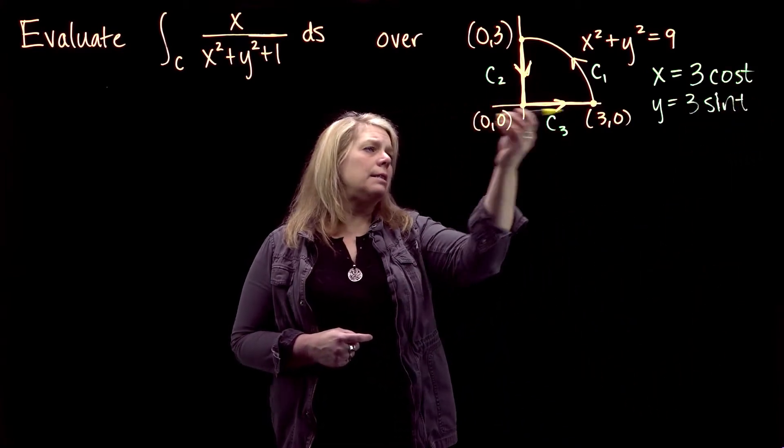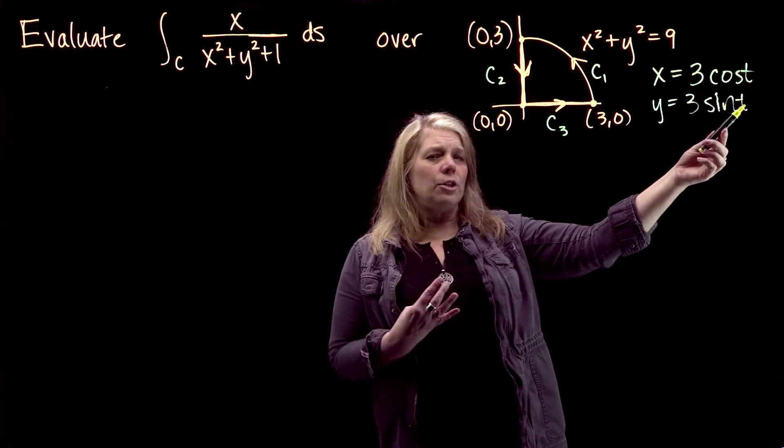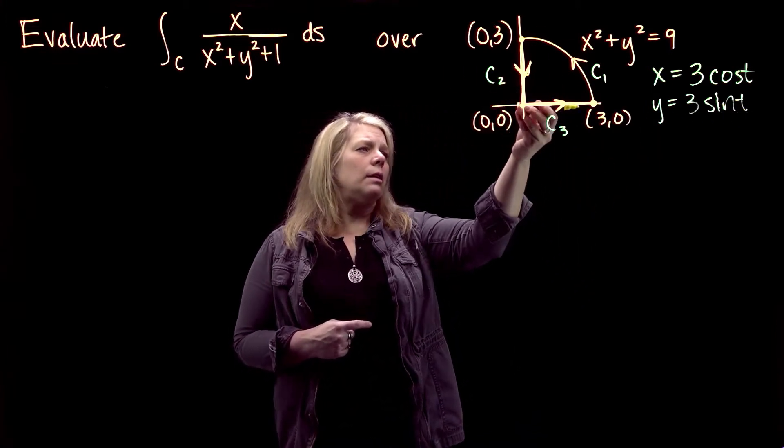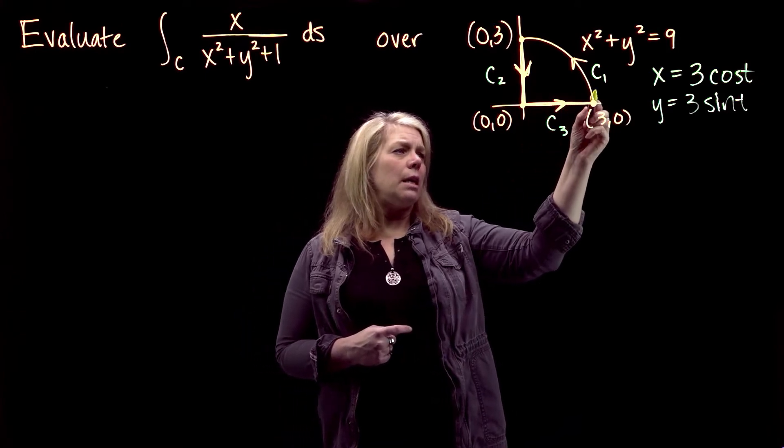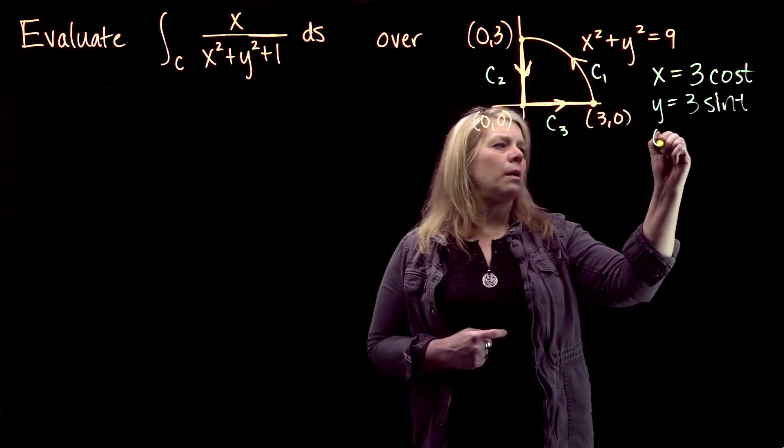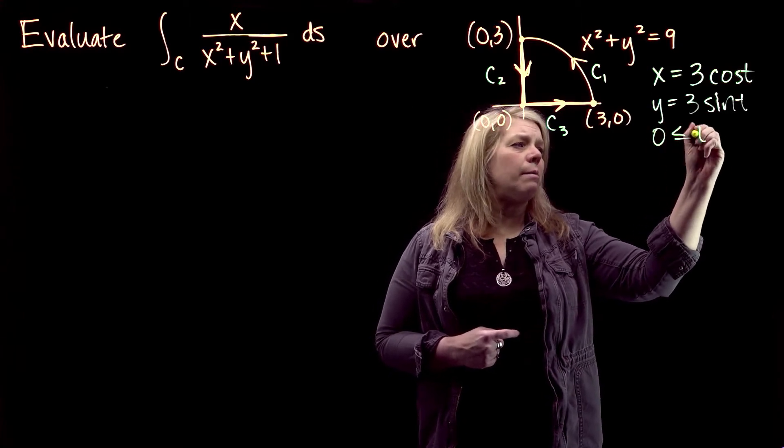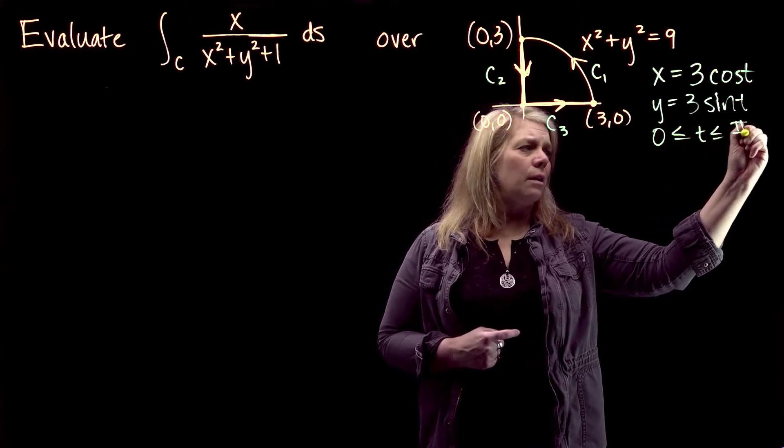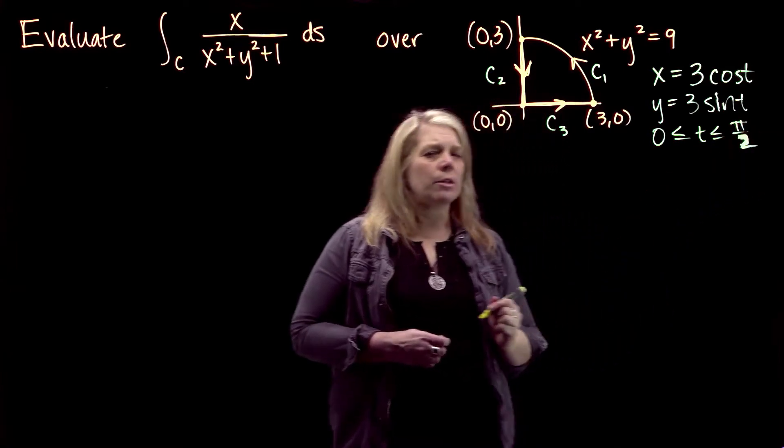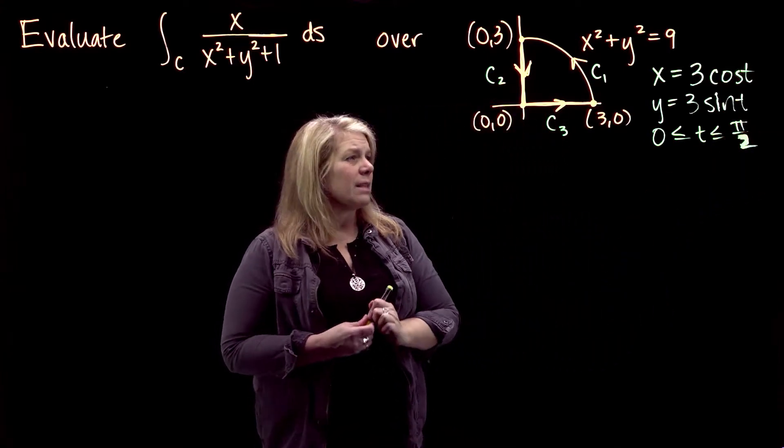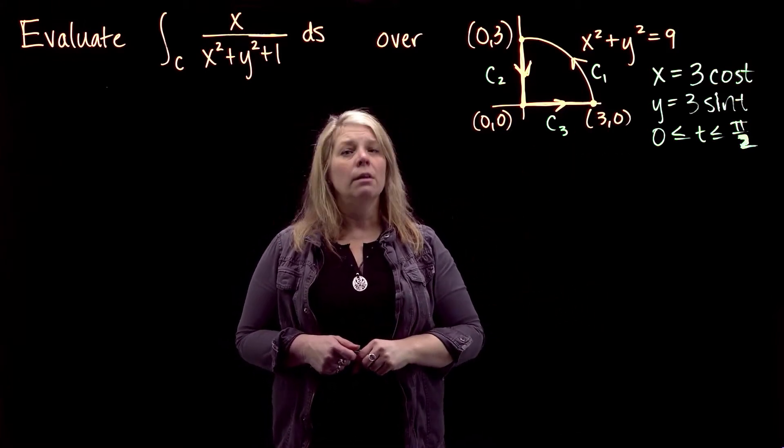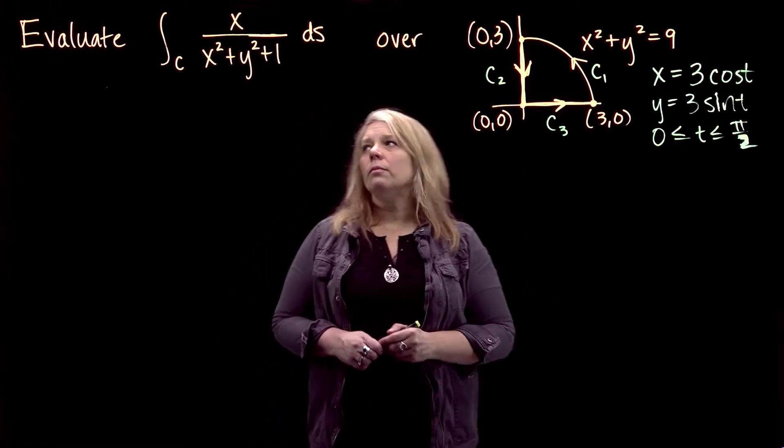At t equals 0, t is essentially acting like your angle theta when you think about going around the circle. At t equals 0, you would be here, and at t equals pi over 2, you would be up here at the top. There are other parametrizations for that part of that circle, but this is the simplest one and also a smooth parametrization for that part of the circle.